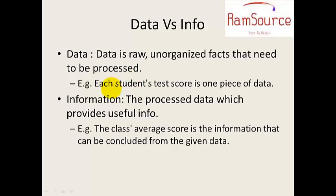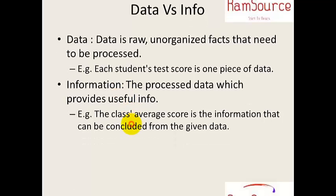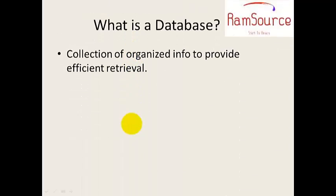So what is the database? The best example is the student test score where the class average score is computed. This is the main difference between data and information. Next is what is a database.